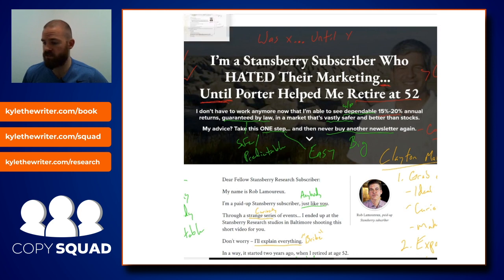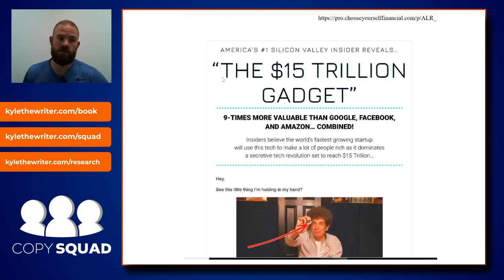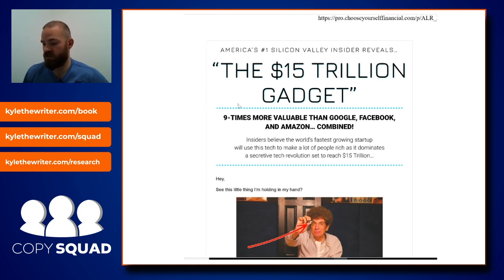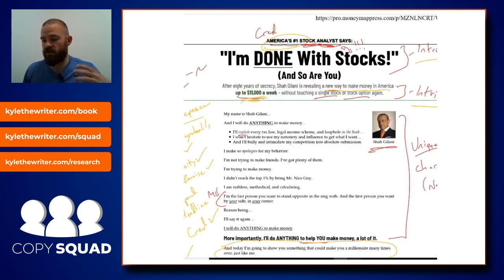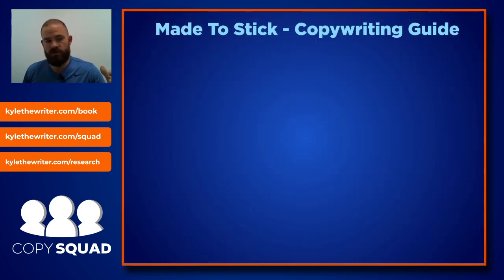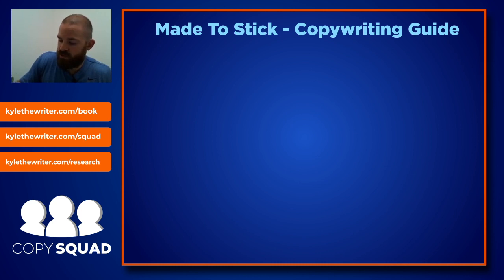These are all backend ideas for systems. I'll show you a front-end idea — this is one I worked on, one of my earliest promos, and it's called the $15 Trillion Gadget. 'America's number one Silicon Valley insider reveals the $15 trillion gadget — nine times more valuable than Google, Facebook, and Amazon combined. Insiders believe the world's fastest growing startup will use this tech to make a lot of people rich as it dominates a secretive tech revolution set to reach $15 trillion.' You might have started to pick up on the counterintuitive nature of these headlines.